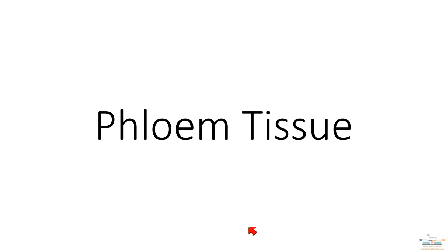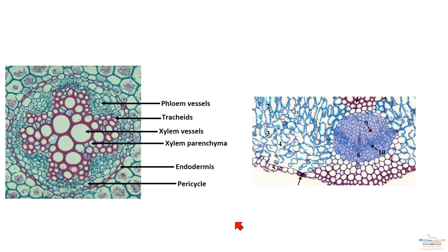This is a reminder of where the phloem tissue is located in the roots. The diagram on the left shows the roots, and you can see that the phloem tissue is situated amongst the xylem tissue. In the leaf, the phloem tissue is found in the region labeled number eight on the diagram.